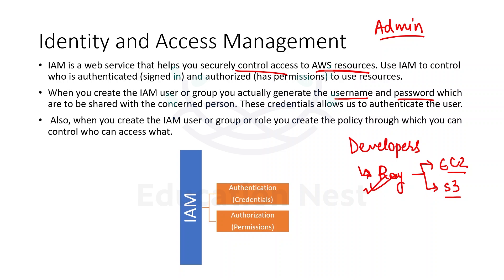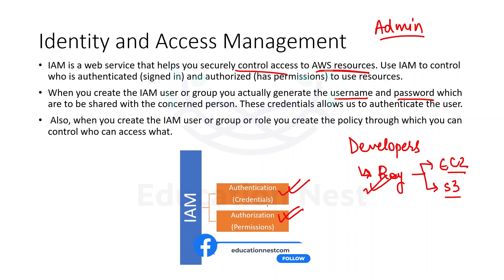So what would IAM be providing us with? It would be providing us with authentication as well as authorization. What is authentication? Authentication means we are trying to prove that we are who we are claiming to be.